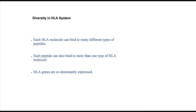We know that a limited number of HLA molecules are present in a person. So how are these limited HLA molecules capable of presenting antigens derived from a huge number of pathogens and transformed cells? This is made possible by diversity present in the HLA system at different levels. First of all, each HLA molecule can bind to thousands of different types of peptides, and each peptide can also bind to more than one type of HLA molecule. This diversity increases the possibility of presentation of all peptides present in the cell on the cell surface.